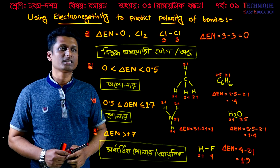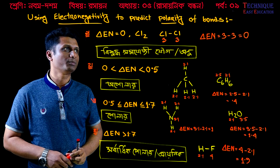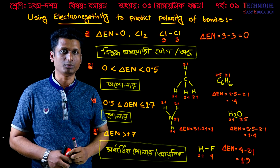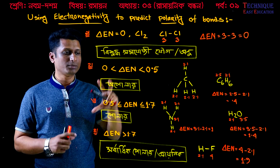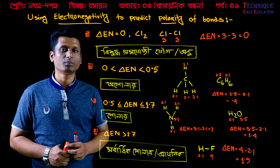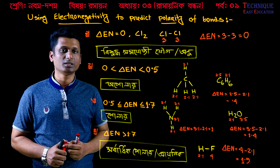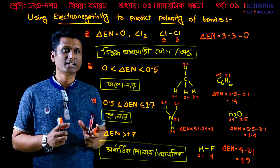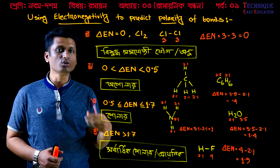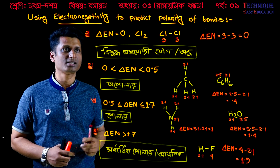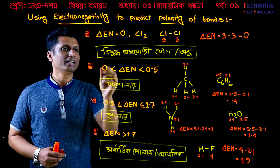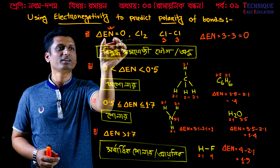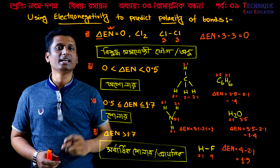Oxygen is electronegative. Looking at the key criteria: the first important point is that delta EN — where EN means electronegativity — is equal to zero. When the electronegativity difference is zero, the bond is nonpolar. This is an important point that allows us to answer MCQ questions about polarity and nonpolar bonds.